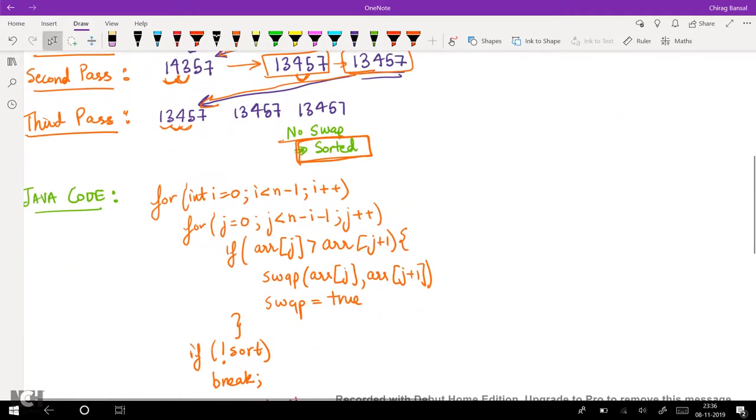Let's look at this Java code. So first we have the outer loop for i, and then we have an inner loop.